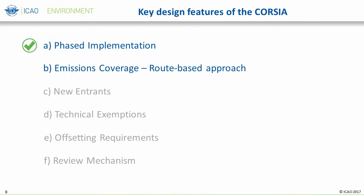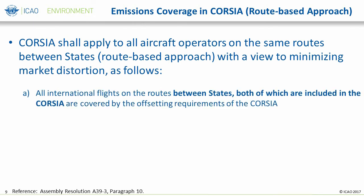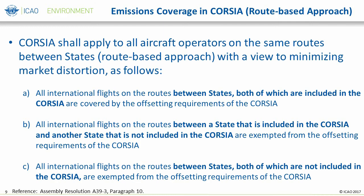We have completed the explanation on CORSIA's phased implementation and will now move to the second design feature: emissions coverage designed through its route-based approach. With the phased implementation of CORSIA, there will be different timing in the participation of states. The concept of a route-based approach is to translate the participation of states in CORSIA into the coverage of emissions for offsetting requirements. The objective is to treat all operators equally on the same route. This is met by including all international routes linking two states, both of which are participating in CORSIA. If one or both of the states on the route are not participating, then the route is not included in the offsetting requirement. This is outlined in paragraph 10 of Assembly Resolution A39-3.